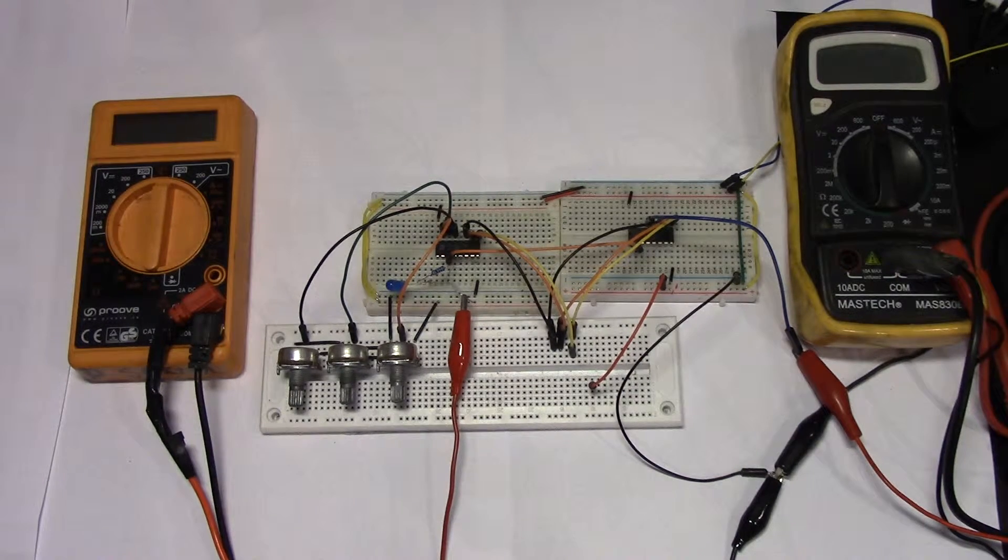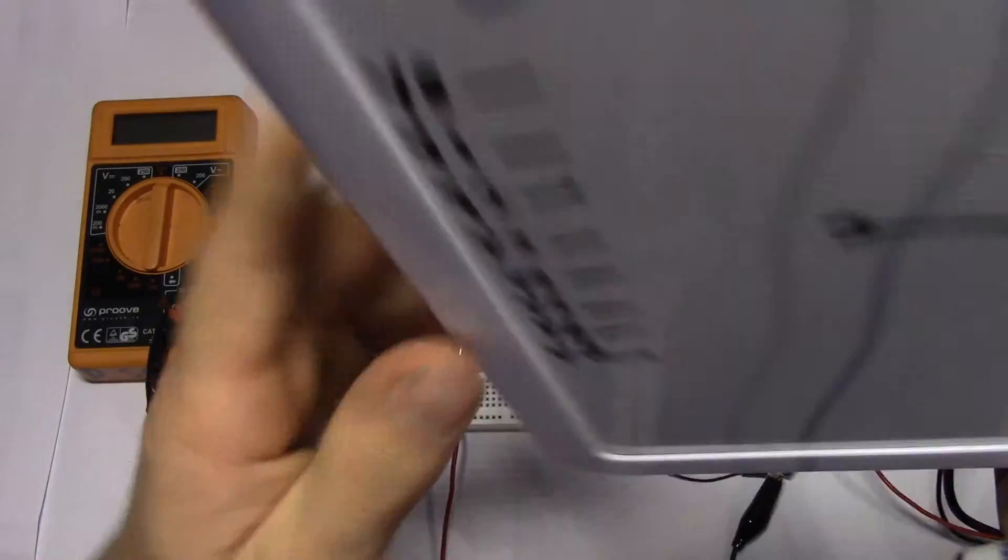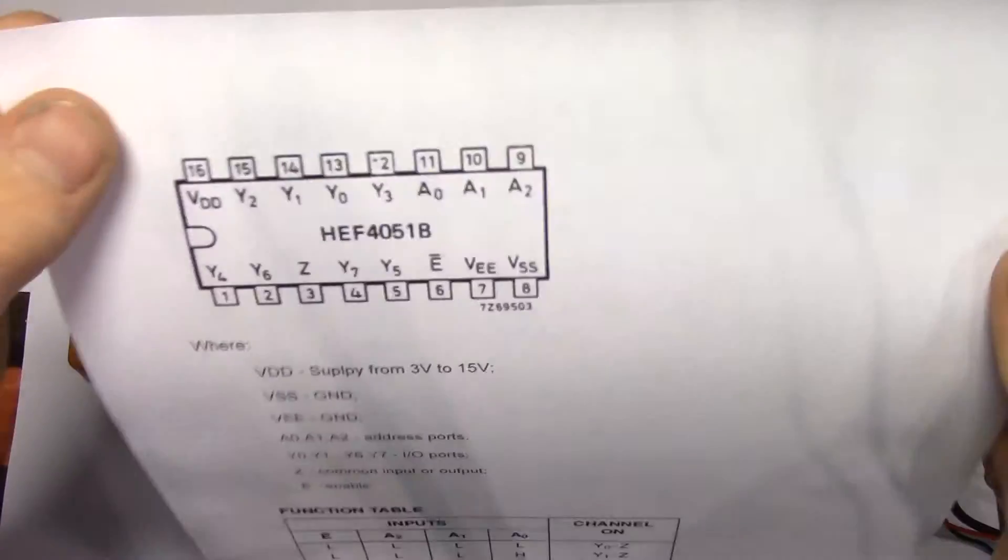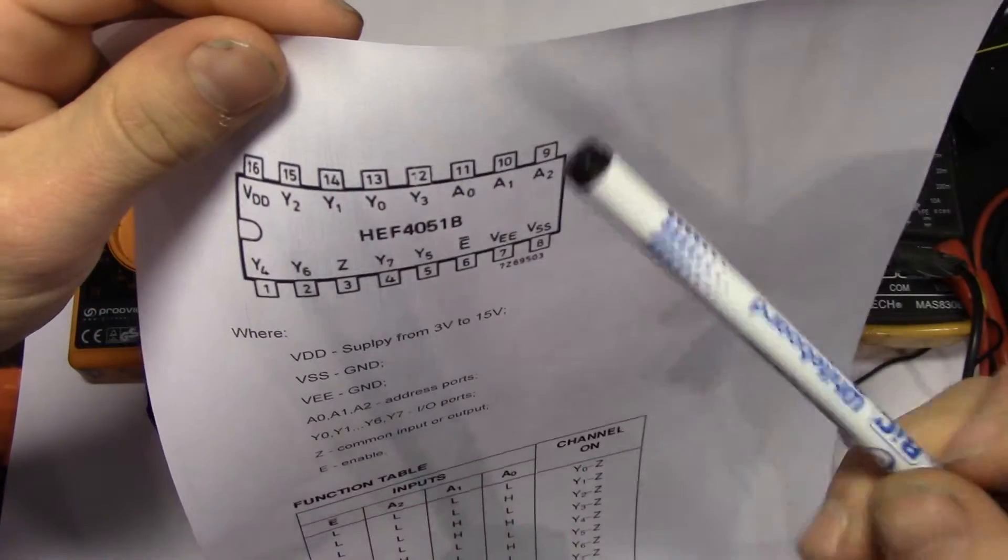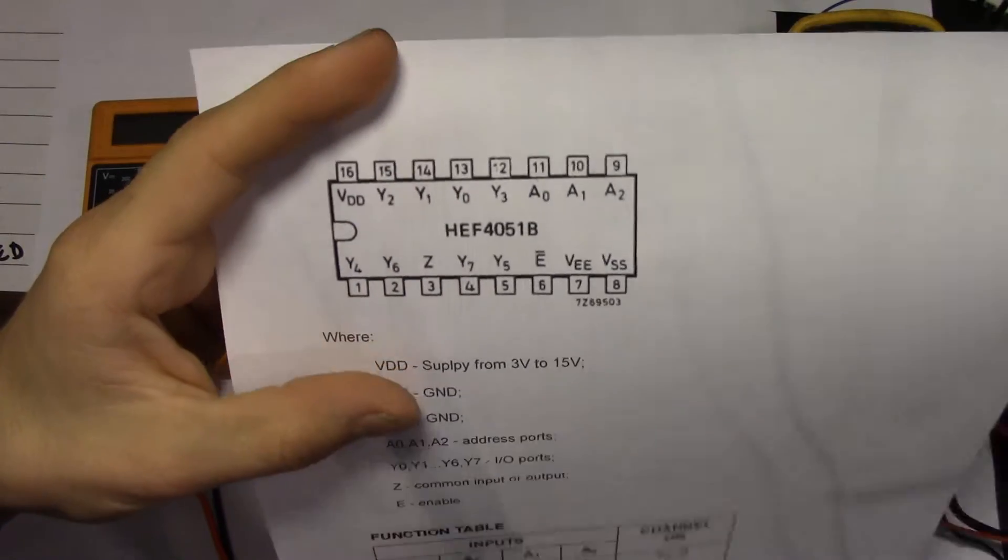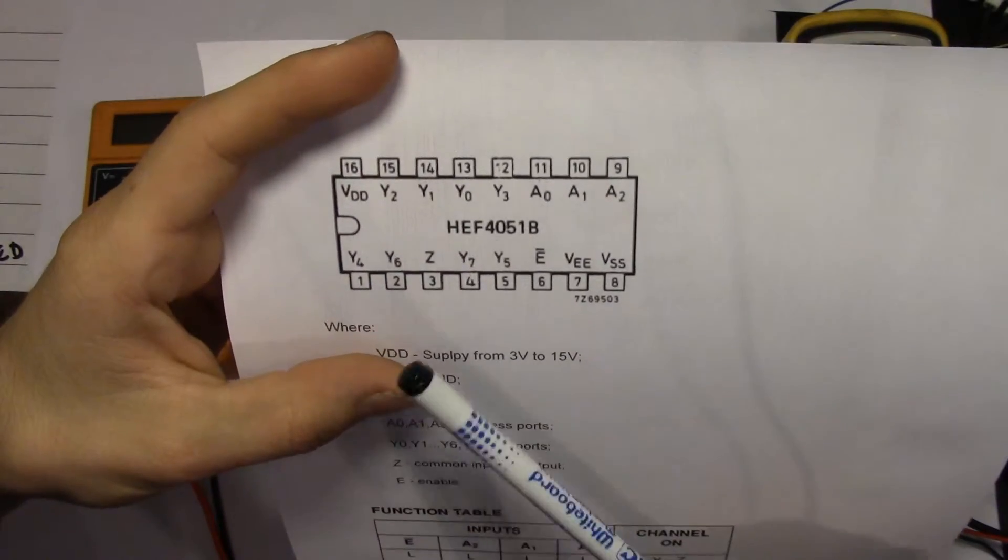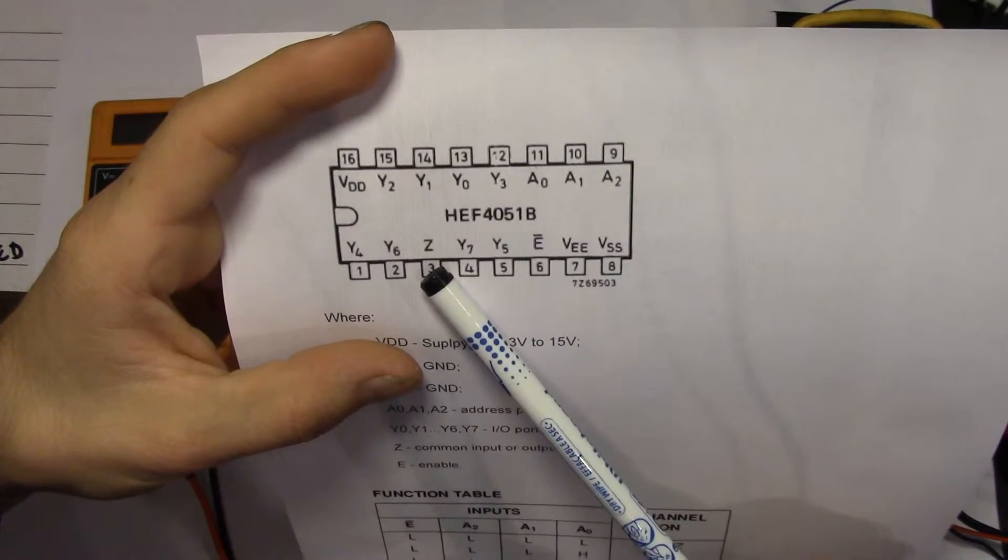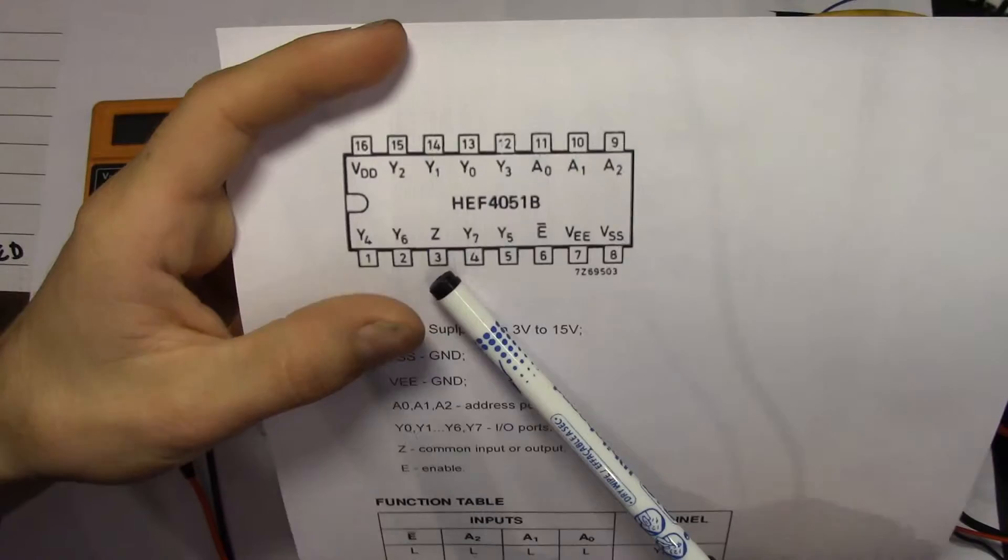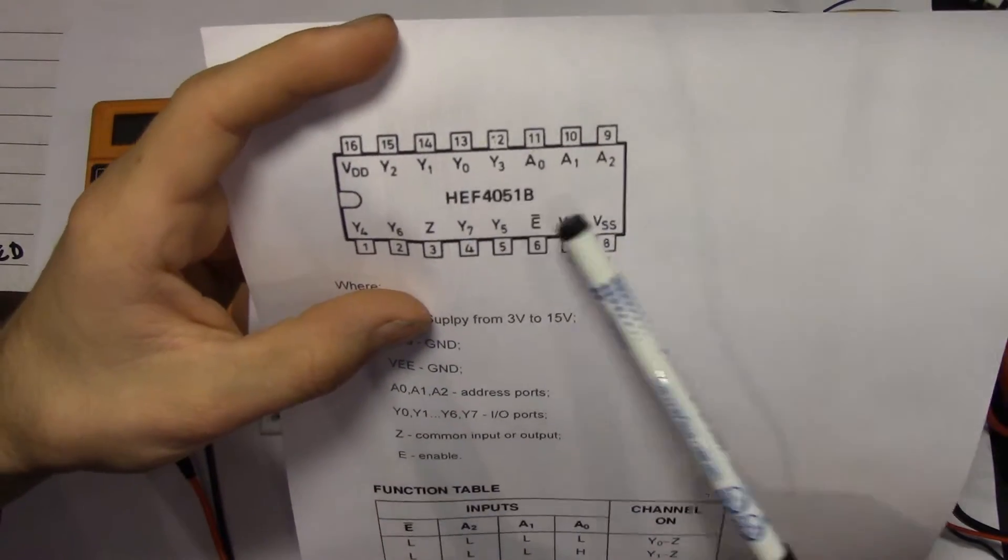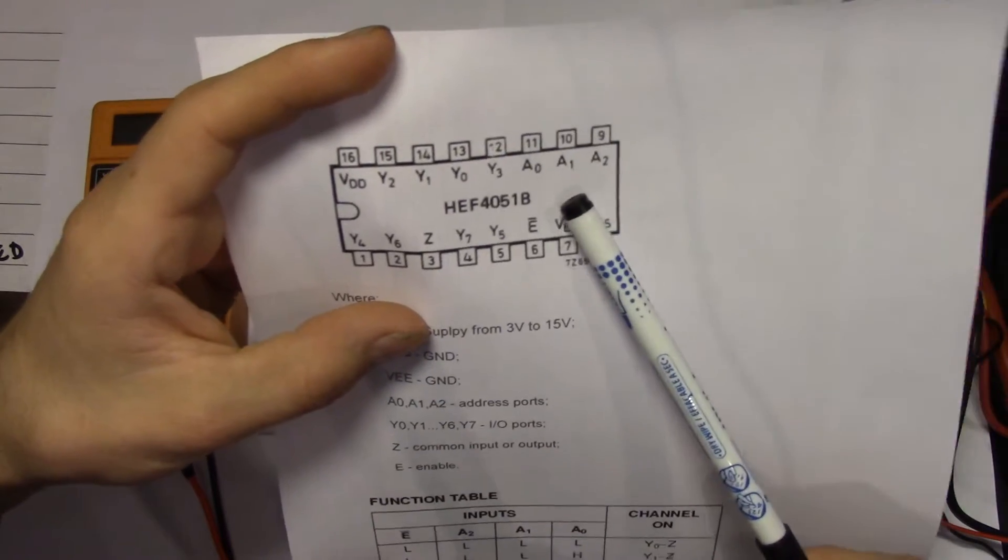First, we can just take a look at this drawing here. This is the pinout. As you can see, you have the positive and negative supply, nothing new there. We can just take the set first, which is the output. You have A0, A1 and A2, which is the select buttons or pins.